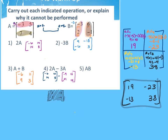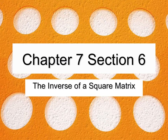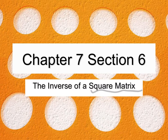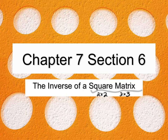Any questions on adding, subtracting, scalar, or multiplying? Alright, so inverse is what we're going to talk about today. Section 7-6 is called the inverse of a square matrix. A square matrix has the same number of rows as columns, so we'll do the inverse of a 2×2 and a 3×3.